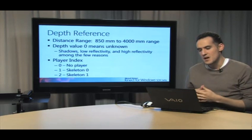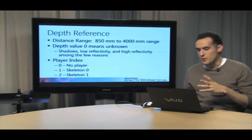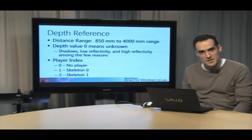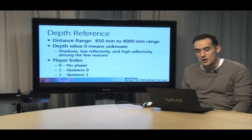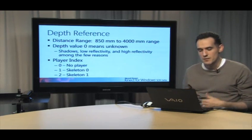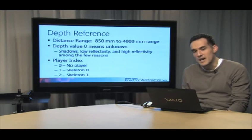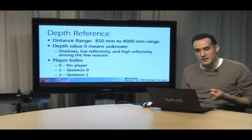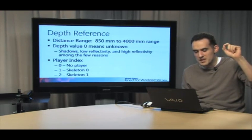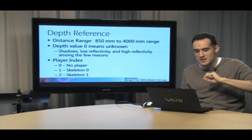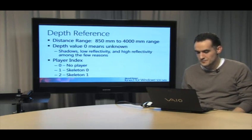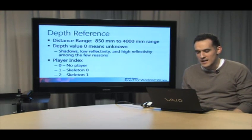So for reference purposes, a range can exist from about 850 millimeters to 4,000 millimeters in terms of total distance. The closer you get, it's just going to tell you 850 millimeters as the minimum distance. Now sometimes you'll get a depth value of 0, and that means unknown, meaning shadows, low reflectivity, high reflectivity among the few reasons, but there's a number of reasons you may actually get a 0 for a depth value. Now the player index, if you're using the depth and player index, you have three possible values. 0, this particular pixel is not an actual player. Player index of 1 represents the first skeleton, or skeleton 0. Player index of 2 represents skeleton 1 because it's a 0 based array. Skeleton 0 is player index 1. Okay. So that is our high level depth reference.